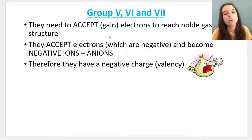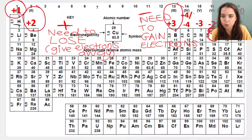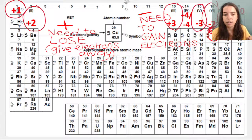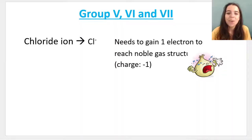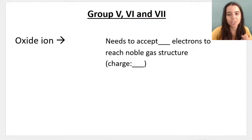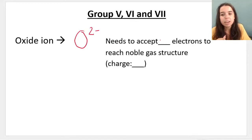When we look at group five, group six, and group seven, those refer to these groups here. The one with the negative three, the negative two, the negative one. Those guys, what do they do? They need to accept electrons. They're going to become more negative. They're going to form anions. For example, chlorine, Cl minus, which means it gains one electron to reach noble gas structure. Oxide ion is O2 minus. They need to accept two electrons to reach noble gas structure. So they have a charge of two minus or minus two.